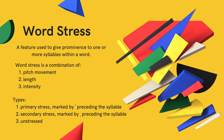Most approaches to word stress distinguish between three possible levels. Primary stress is marked by an upper mark — like an apostrophe — preceding the relevant syllable. Secondary stress is marked by a lower mark, such as a comma, preceding the syllable in question. And finally, the third level is unstressed.